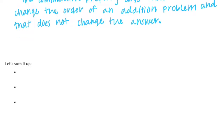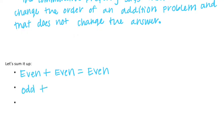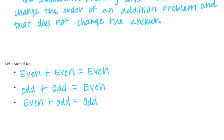Let's sum it up: even plus even is always equal to even. Odd plus odd is equal to even. And even plus odd is always equal to an odd number.